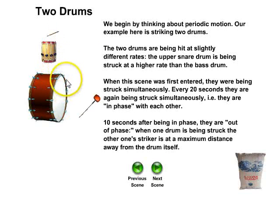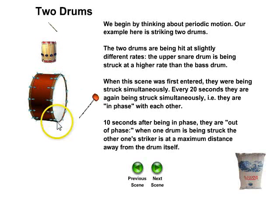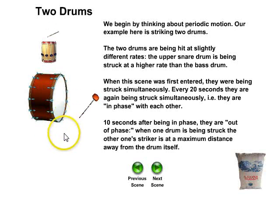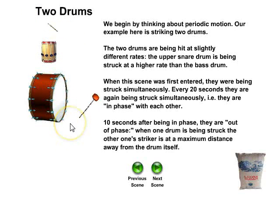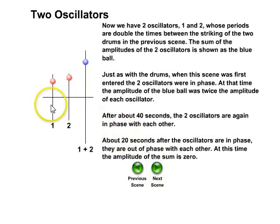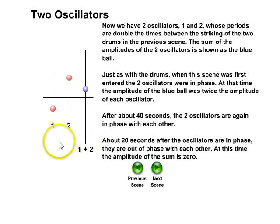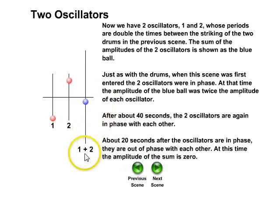When the scene starts, they are being struck simultaneously — they're in phase. About every 20 seconds, they are again struck simultaneously because they're again in phase with each other. In between, they're out of phase. Here are two oscillators, one and two, with the blue ball showing the amplitude of the two summed together. When the oscillators are in phase, the amplitude of the blue ball is twice the amplitude of each oscillator — its maximum. When they're out of phase, 20 seconds later, the blue ball doesn't move at all. Then 20 seconds after that, the oscillators are in phase again.